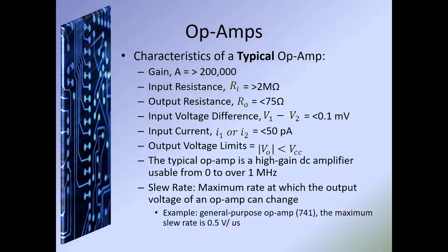The slew rate is the maximum rate at which the output voltage of the op amp can change. In other words, if we have a sinusoidal waveform coming in, we want to make sure the output can change proportionally. If the frequency gets too fast, the output will start to deteriorate or shrink. So the slew rate is super important, and we'll do some calculations on it later. For example, with the general-purpose 741 op amp, the maximum slew rate is 0.5 volts per microsecond — meaning as long as the signal doesn't exceed that rate, we should have a clean output signal.